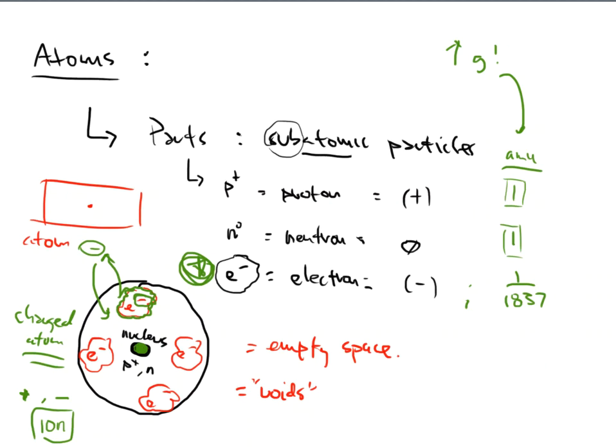We previously had a discussion on the atom. We said the atom has many subatomic particles, but we're only going to focus on three: the proton, the neutron, and the electron. The proton carries a positive charge, the neutron carries no charge — neutral — and the electron carries a negative charge.